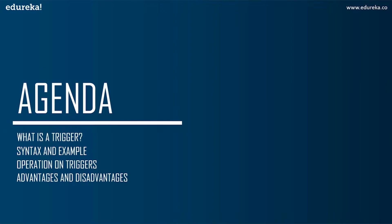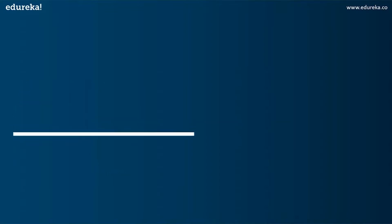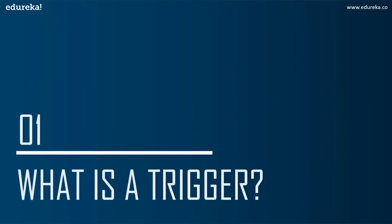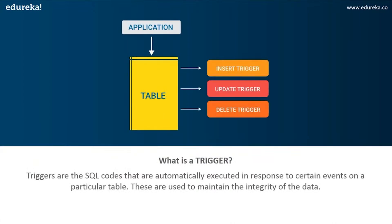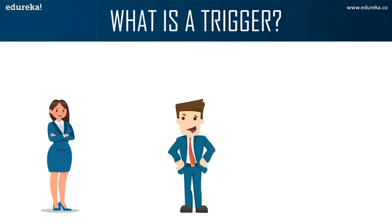Let's get started. The first topic in today's discussion is what are triggers. Triggers are SQL code that are automatically executed in response to certain events on a particular table. These are used to maintain the integrity of the data in a given table. A trigger in SQL works similar to a real-world trigger.